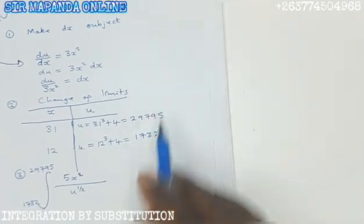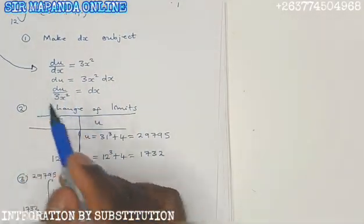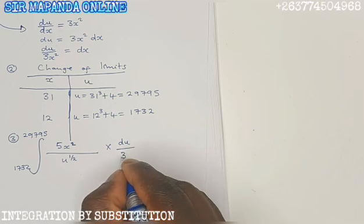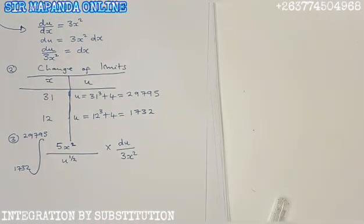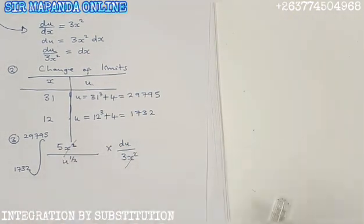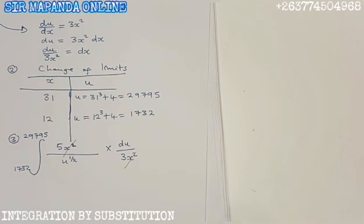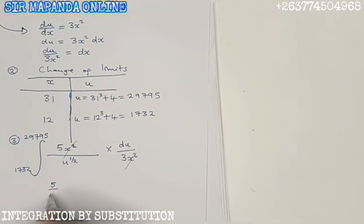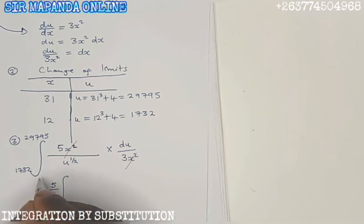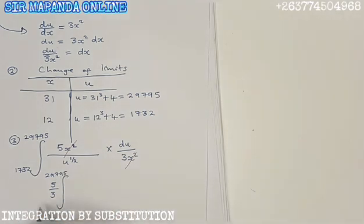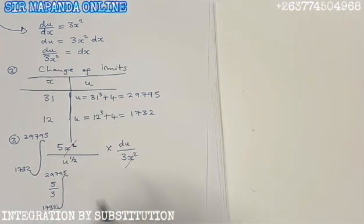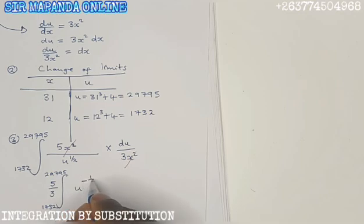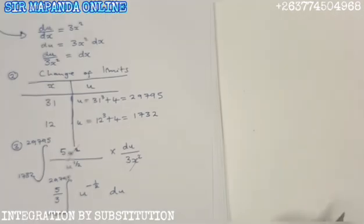Then on dx here, we are going to substitute the dx that we have made the subject in stage 1. I am going to multiply by du over 3x squared. This is what I was trying to say, that the x squared is going to cancel off with the x squared. I can factor out 5 over 3 outside the integral, having 29,795 of the upper limit, 1732 is the lower limit. You will be left out with 1 over u to the power of half, which is equal to u to the power of minus half du.